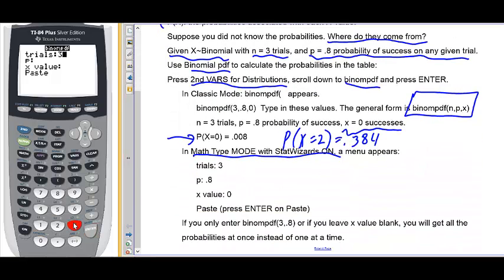So, we have to put in three for trials, point eight for p. And if you want the probability of a particular x value, you can type it in. Let's type in one. Go to paste. Hit enter.